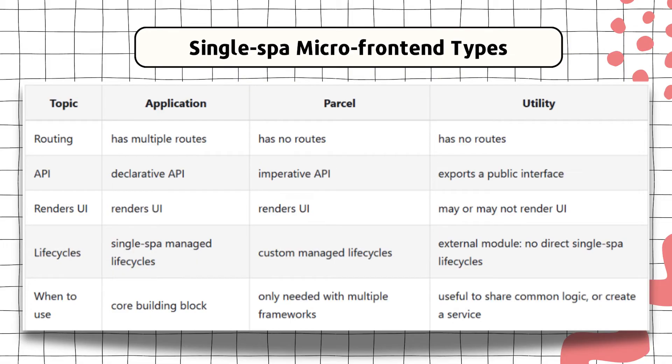That's the main idea behind the Parcel micro frontend. For Utility, there are no routes. Regarding APIs: Application has a declarative API, Parcel has an imperative API, and Utility simply exports a public interface. Regarding UI: Application and Parcel both render UI, but Utility may or may not render UI.